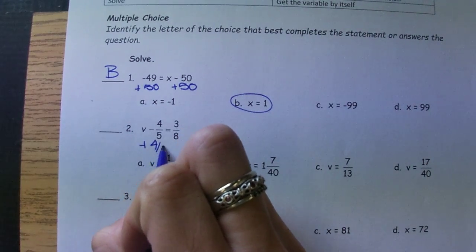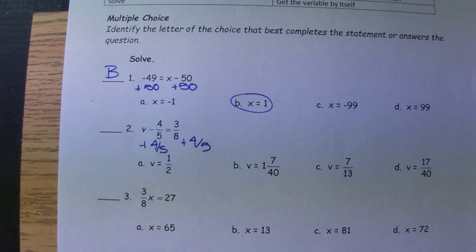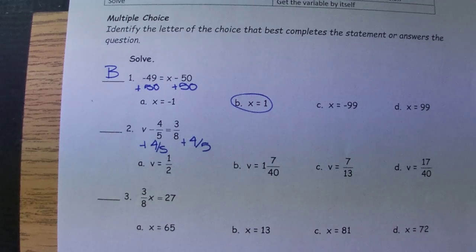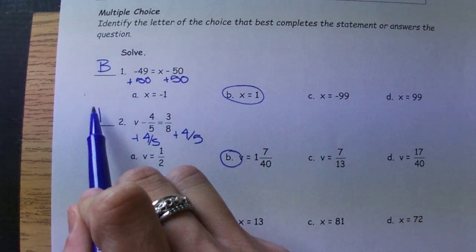Number two, we're going to undo subtracting four-fifths by adding four-fifths. Even if you feel overwhelmed by that fraction, remember in your calculator you can just go ahead and add the three-eighths plus the four-fifths. It will give you 1 and 7 fortieths, so that's B.